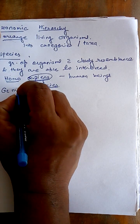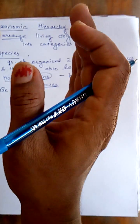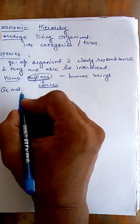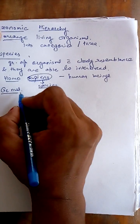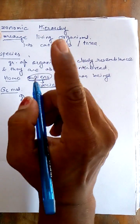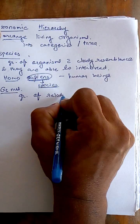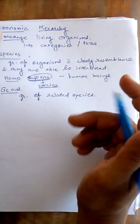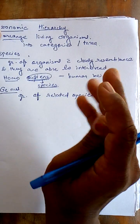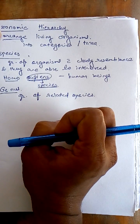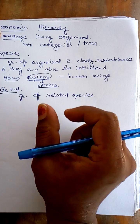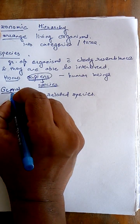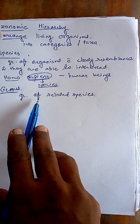The next category is genus. This is the first higher category above the species level. The genus is defined as a group of related species. We make a group of related species — for example, species one, two, three, four — because those species have some common characters, and that group is called the genus. So genus means a group of related species.